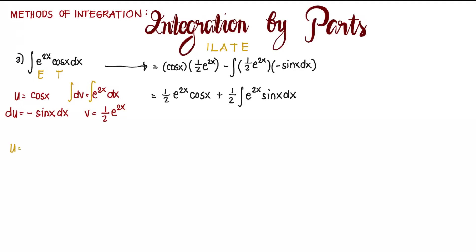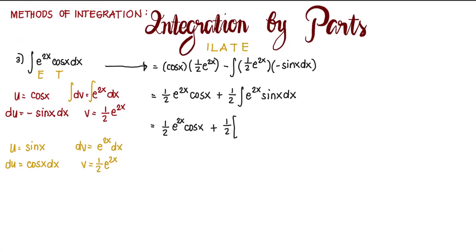This time we let u equal sine x. Finding the differential, that's cosine x dx. The dv portion is e to the power of 2x dx, and integrating, v equals 1/2 e to the power of 2x. We substitute: that's 1/2 e to the power of 2x cosine x, plus 1/2, bracket — that's u times v, so sine x times 1/2 e to the power of 2x — minus the integral of v du: 1/2 e to the power of 2x times cosine x dx.